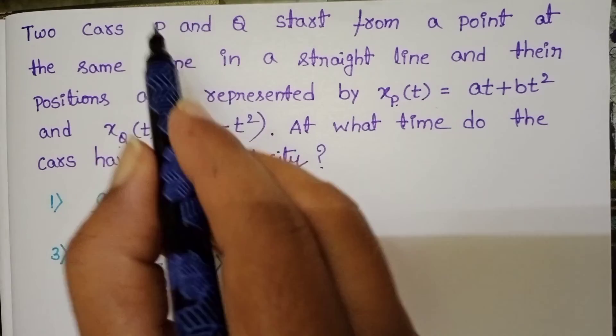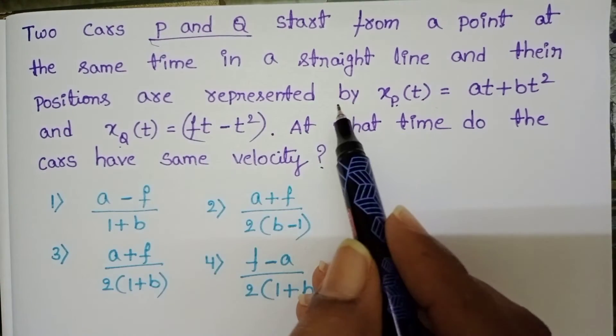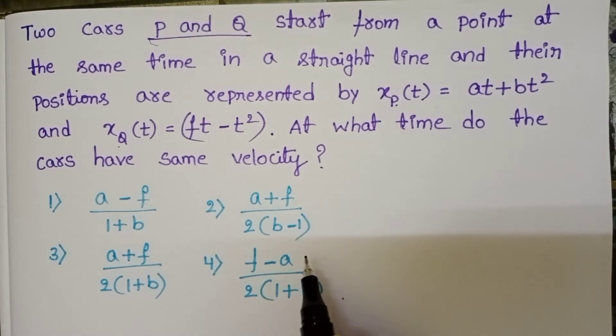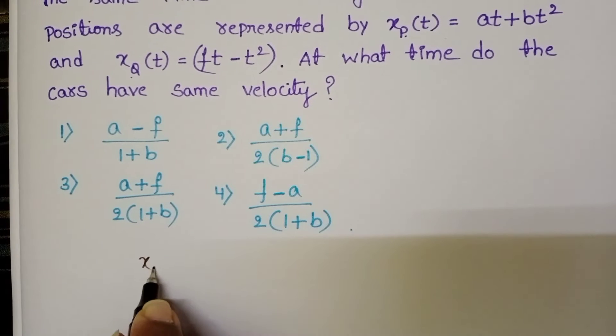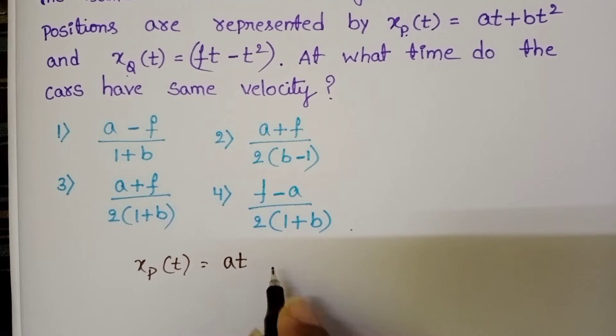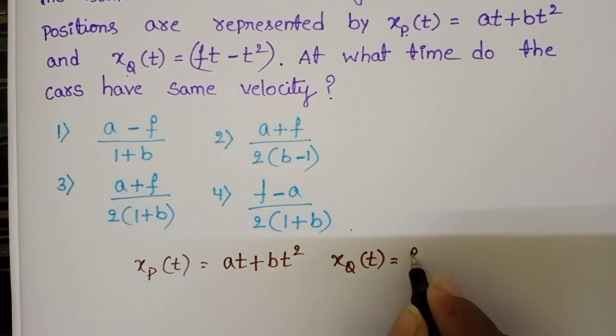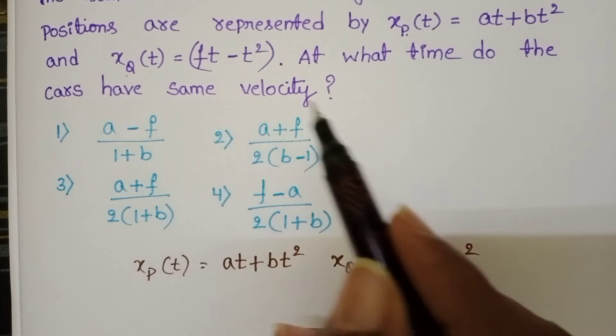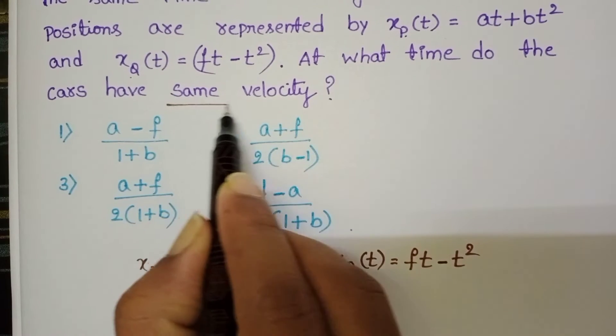In the given question, two cars P and Q start at the same time in a straight line. With the given positions, at what time do the cars have the same velocity?